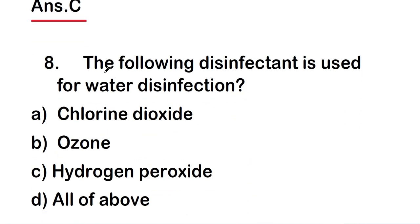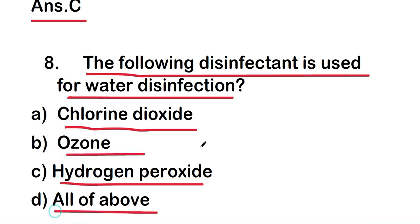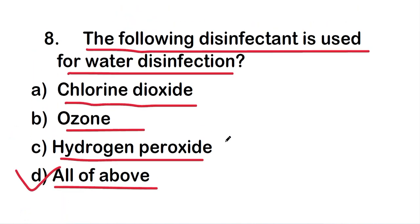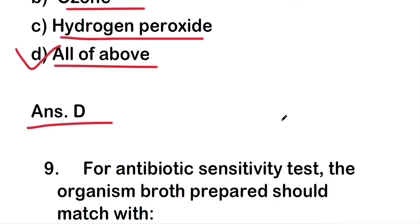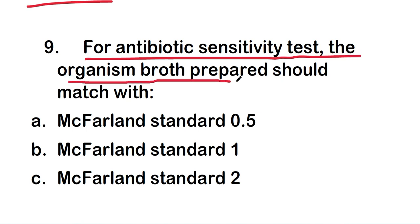Question eight: which disinfectant is used for water disinfection? Options are chlorine dioxide, ozone, hydrogen peroxide, or all of the above. The right answer is option D — all of the above. So chlorine dioxide, ozone, and hydrogen peroxide are all used for water disinfection.